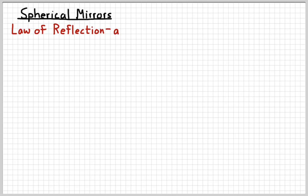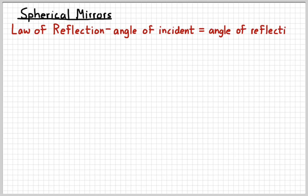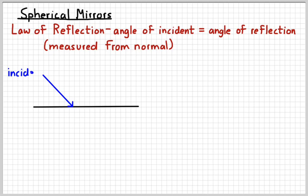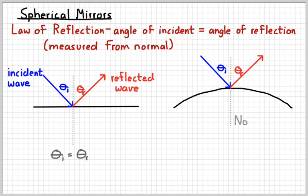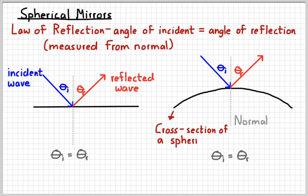Let's first remember the law of reflection that we learned last time. When you have an incident ray at an angle relative to a mirror, the angle of incidence is equal to the angle of reflection. Remember that we always measure these things from the normal to the surface. This same rule still applies when the surface is curved — the incident angle equals the angle of reflection — which is basically a cross-section of a spherical mirror like we're going to learn about today.